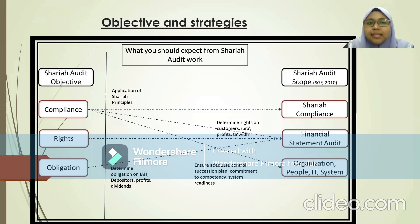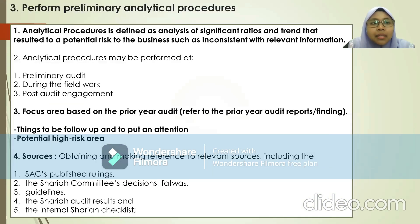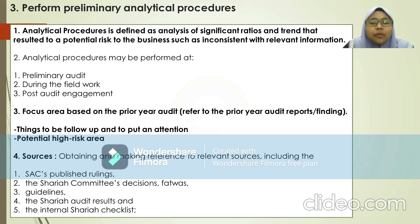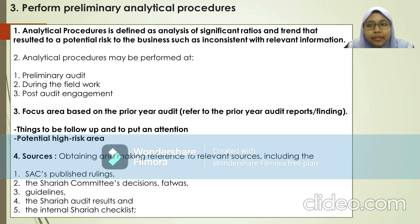Here is an example of objectives and Sharia audit strategies, showing what we can expect from the Sharia audit work. The third process is to perform preliminary analytical procedures, defined as the analysis of significant ratios and trends that result in potential risks to a business. The analytical procedure may be performed at three levels: before the audit starts, during the fieldwork process, and after the audit engagement.